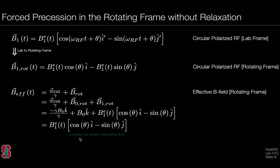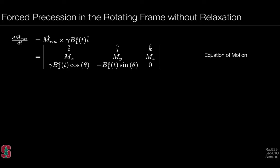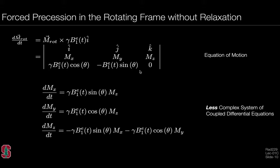As a thought experiment, when the phase of the RF pulse is zero, the effective field collapses to just the B1 field along the i-hat direction. Substituting the B-effective field into the equation of motion in the rotating frame gives two terms — the RF phase term is retained but there is no externally applied B0 field, as that was demodulated by working in the rotating frame. Carrying out the cross product yields a less complex system of coupled differential equations, where X couples with Z, Y couples with Z, and Z couples with X and Y — more tractable than before.